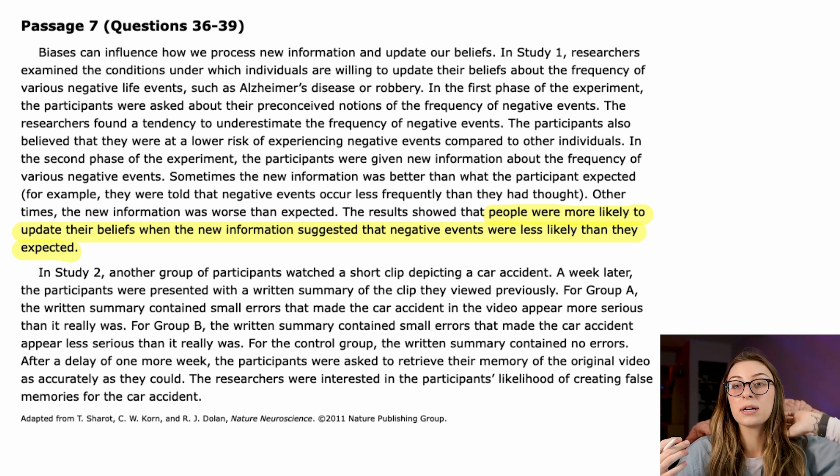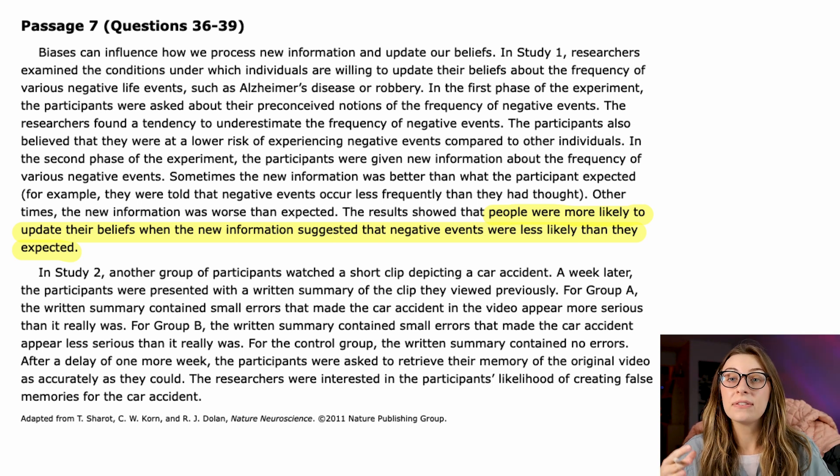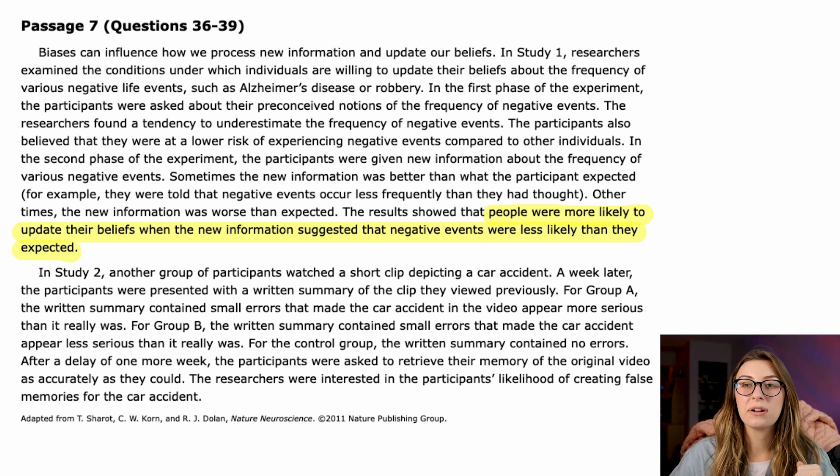The results showed that people were more likely to update their beliefs when the new information suggested that negative events were less likely than they expected. So to bring it all together, not only do these participants believe that negative life events happen less frequently than they actually do, they also are more likely to believe when they're given new information that they happen even less frequently. So if the prevalence of Alzheimer's disease is one in a thousand, these participants would say, I think probably Alzheimer's like one in 5,000. And then if they're given new information that says it's actually one in 10,000, they're more likely to believe that than if they were told it's one in 1,000.